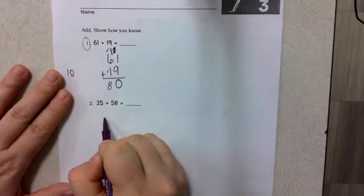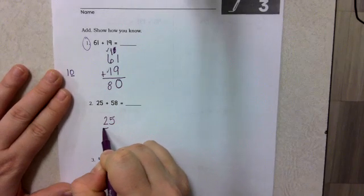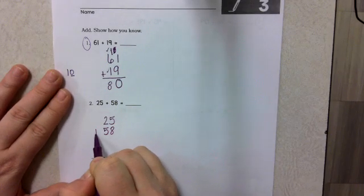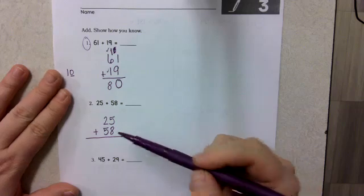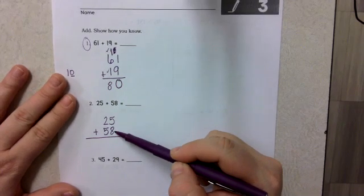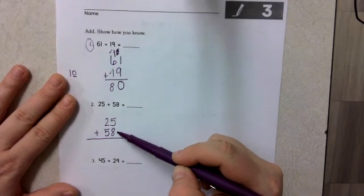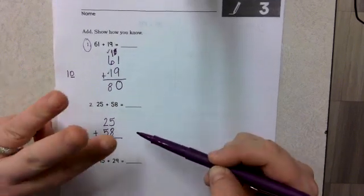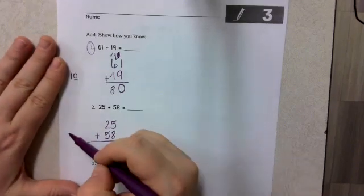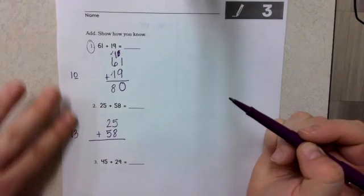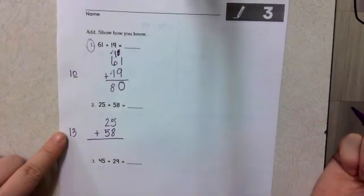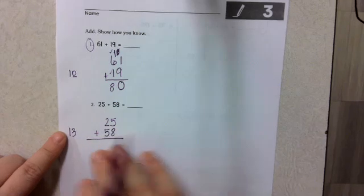Next one: twenty-five plus fifty-eight. Stack it, make sure it is aligned. Which is larger, eight or five? Eight's larger. Eight, nine, ten, eleven, twelve, thirteen. I like writing that number off to the side just to analyze. It doesn't have anything to do with this, but it lets us see it.